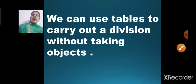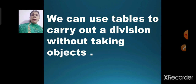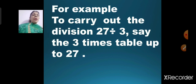We can use tables to carry out division without taking objects. If we want to carry out a division without taking out any objects, we can use multiplication tables. For example, you need to carry out the division 27 divided by 3. You will say the table of 3 up to 27, till where you get 27.